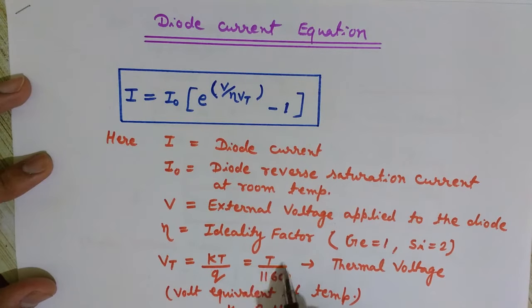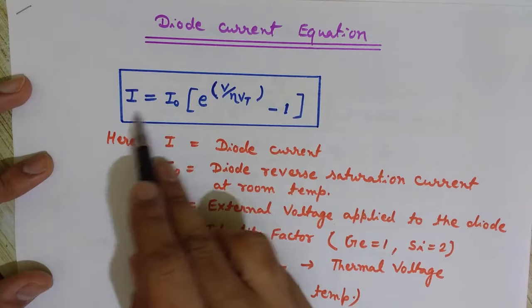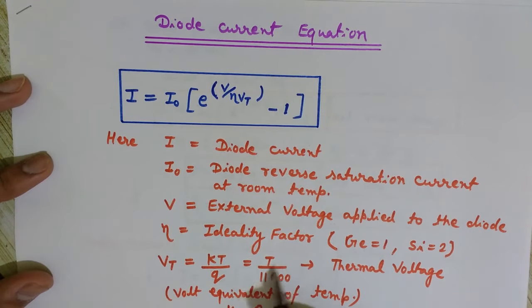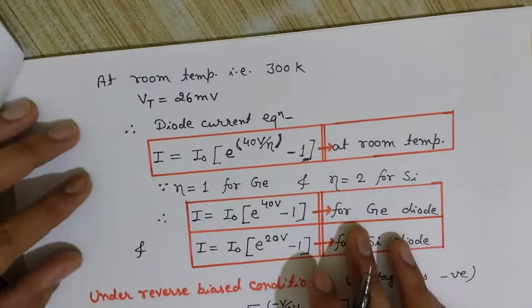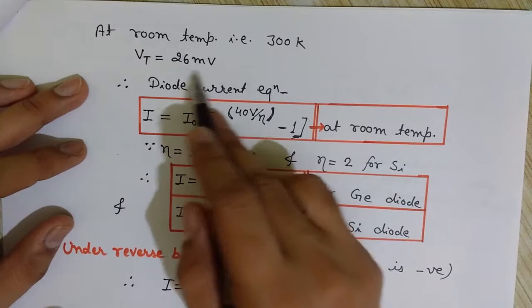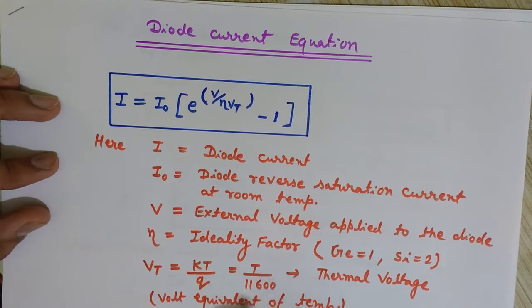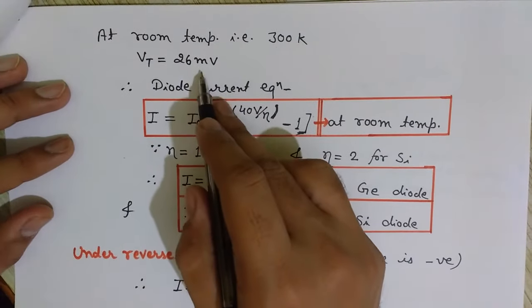Using this simplification VT = T/11600, we can simply place the value of T. Now we will see how the equation changes at room temperature. Room temperature means 300 kelvin, so we place T = 300. You can find that VT becomes equal to 26 millivolts at room temperature.